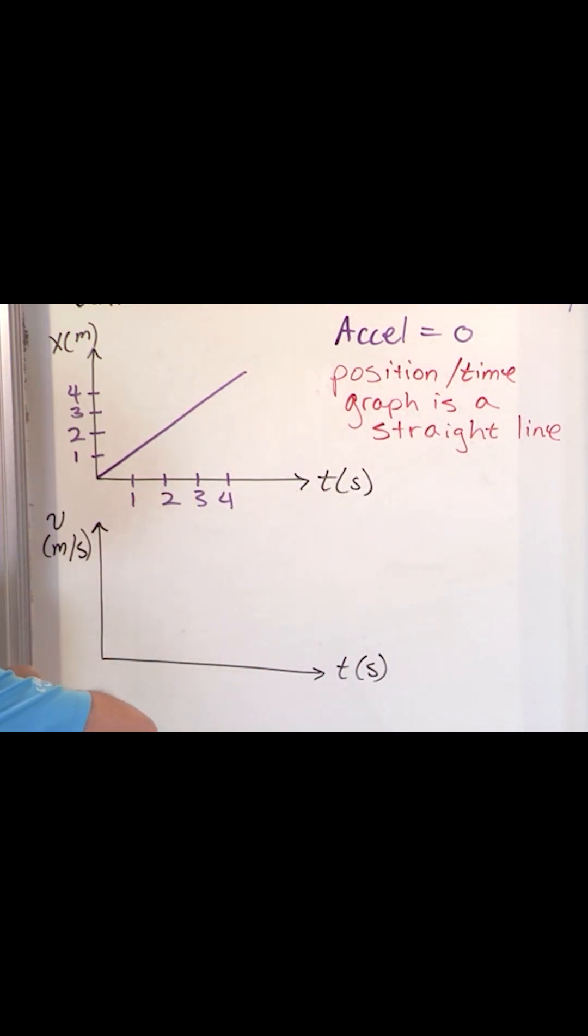So if this is the position, the velocity, I don't care about units so I'm not labeling anything, but if that's the position, the velocity, what do you think it's going to be? It's going to be a constant, a number that doesn't change with time.